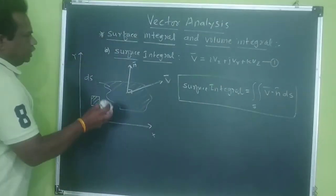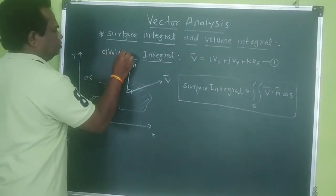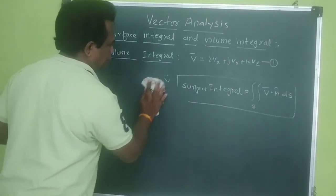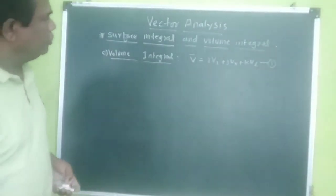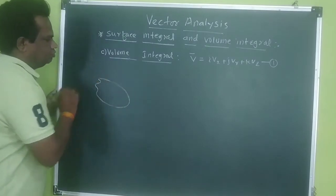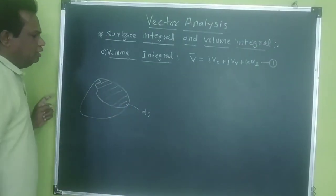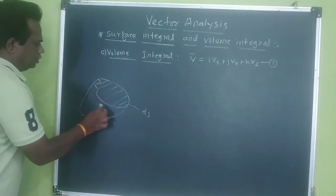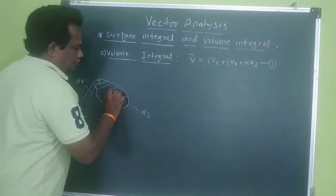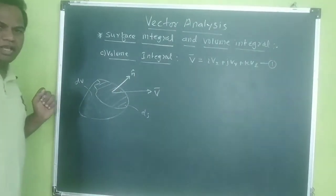We are now going to move forward to the next one, that is the volume integral — part C is the volume integral. So now we are going to consider the volume integral. Suppose this is a surface bounded by surface area dS, and this surface area is bounded by some other surfaces — that region is called the volume dV. The vector field is moving in a direction where N̂ is again the normal vector.